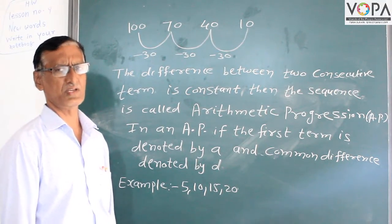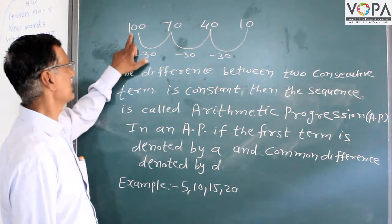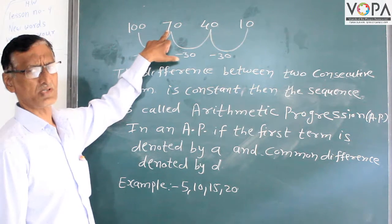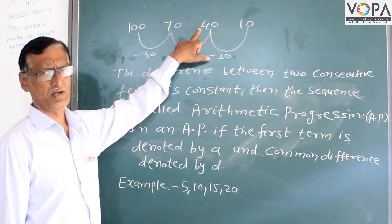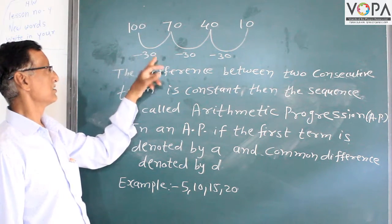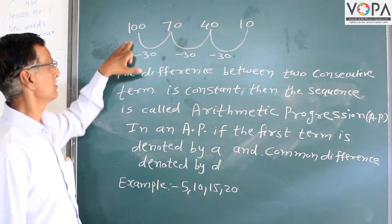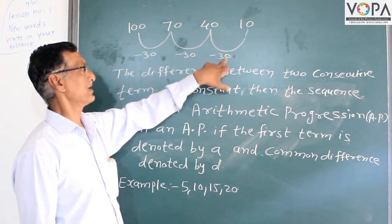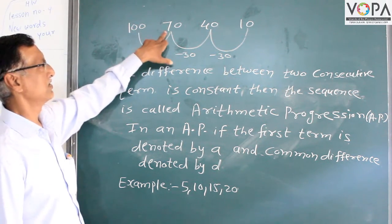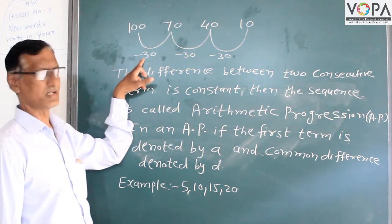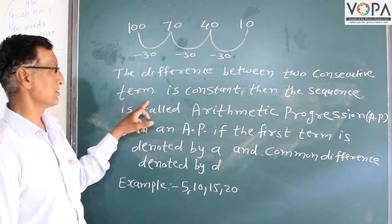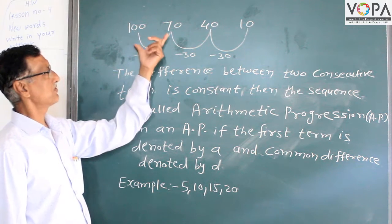You have learned some sequences. For example, 100, 70, 40, 10. This sequence has 100 minus 30 equal to 70, 70 minus 30 equal to 40, 40 minus 30 equal to 10. The same difference between two consecutive terms is constant — minus 30 is the constant. When the difference between two consecutive terms is constant, the sequence is called an Arithmetic Progression, or AP.